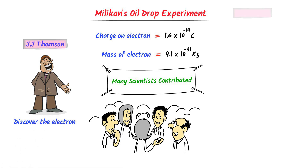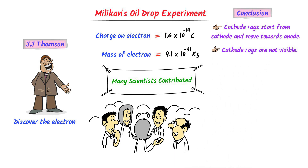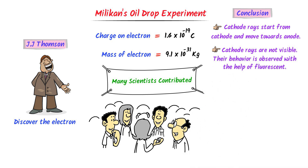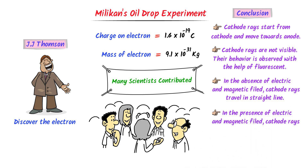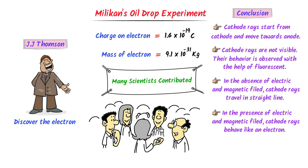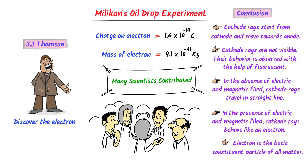From all these studies, we conclude: the cathode ray starts from the cathode and moves towards the anode. These rays themselves are not visible, but their behavior can be observed with the help of certain materials like a fluorescent screen. In the absence of an electric or magnetic field, these rays travel in a straight line. In the presence of an electric or magnetic field, the behavior of cathode rays is similar to that expected from negatively charged particles. The characteristics of cathode rays do not depend upon the material of the electrodes or the nature of the gas present in the cathode ray tube. Thus we conclude that electrons are basic constituents of all materials.